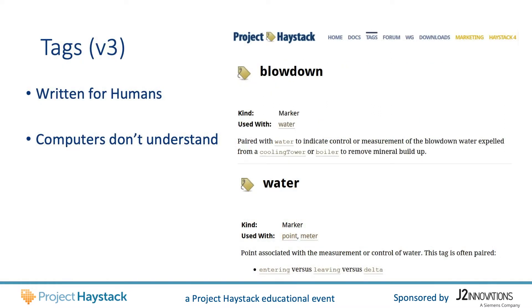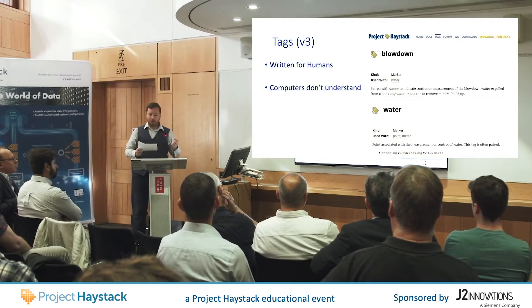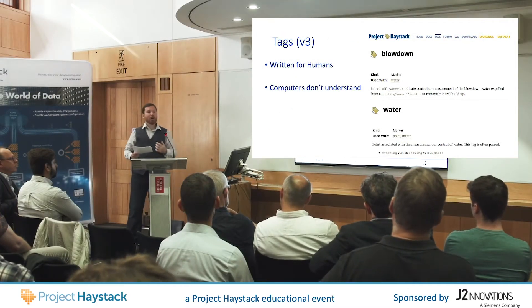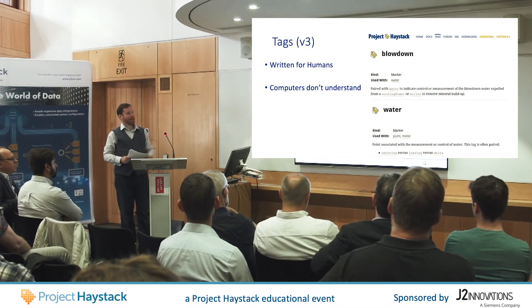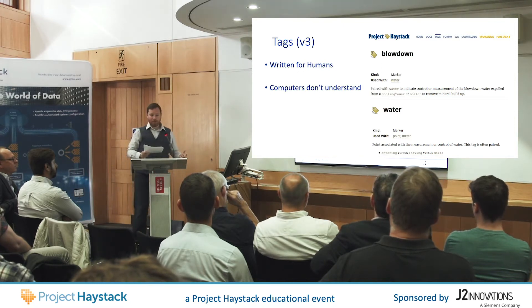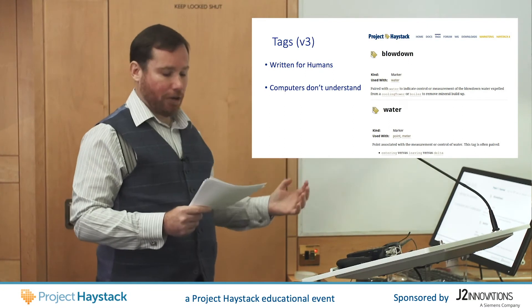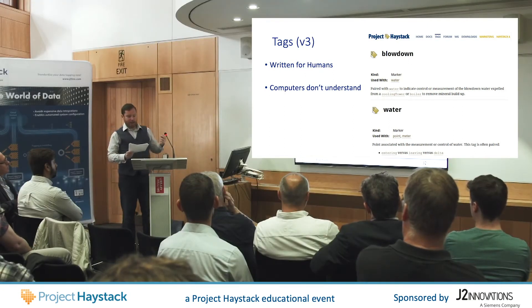Let's have a closer look at these Project Haystack tags. They are all defined on the Project Haystack website. I've taken a couple of screenshots of some of the tag definitions. We have blowdown at the top — it says it is paired with water to indicate control or measurement. Then we have the water tag, which is a point associated with the measurement or control of water. Now as a human reading the website, this is a great source of information. But as a computer programmer, I have an issue — the definitions of these Haystack tags are exactly what you see: English words on a website. There's nothing here that a computer can read and understand, which means the application of Haystack tags is all in the hands of humans. And we humans have a habit of making mistakes.